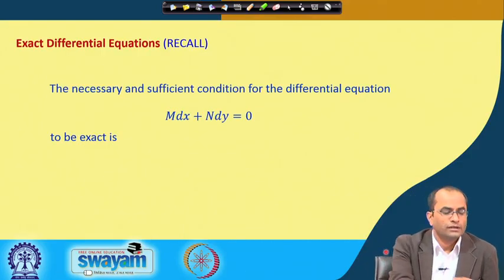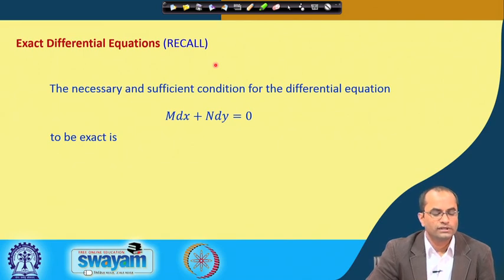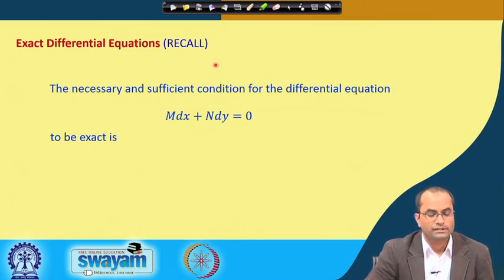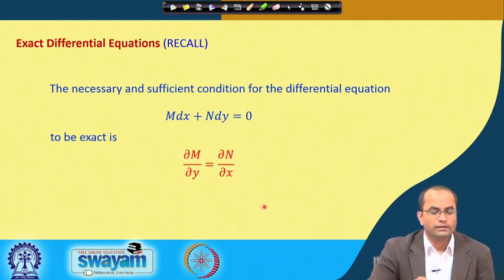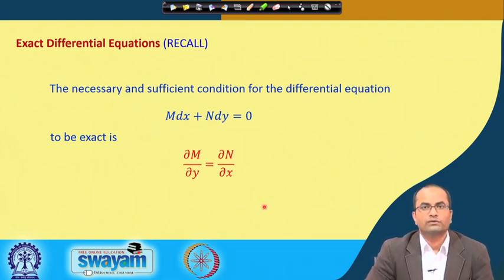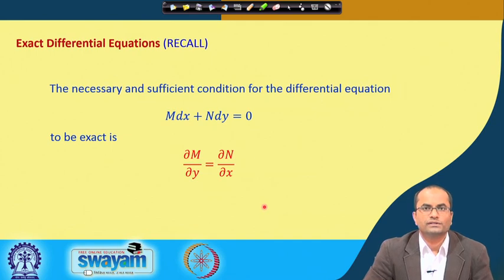Just to recall, we have the necessary and sufficient conditions for exactness. The necessary and sufficient condition for the differential equation M dx + N dy = 0 to be exact is that ∂M/∂y = ∂N/∂x. This is necessary and sufficient, meaning if this condition holds the equation must be exact, and if the equation is exact then this condition must hold.